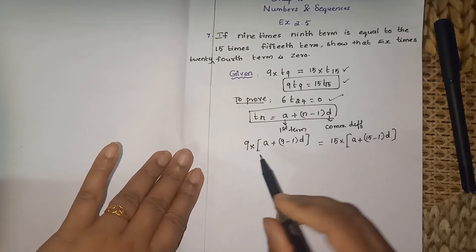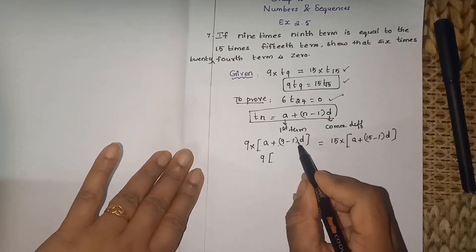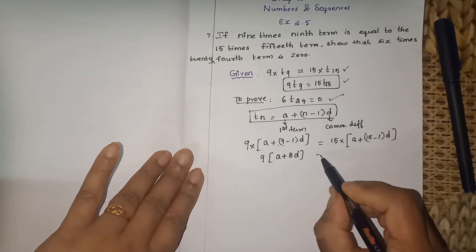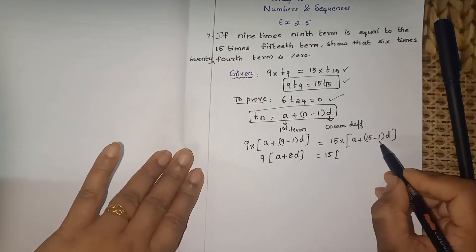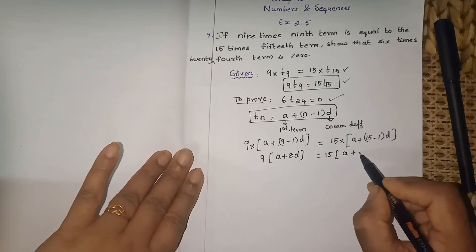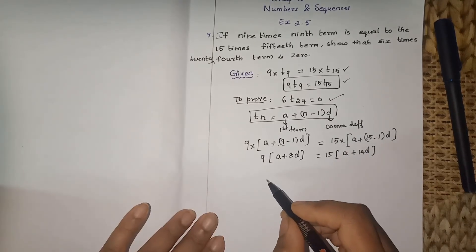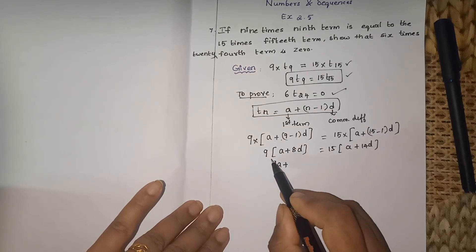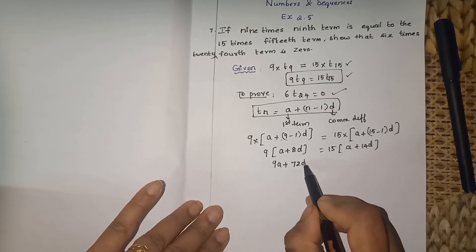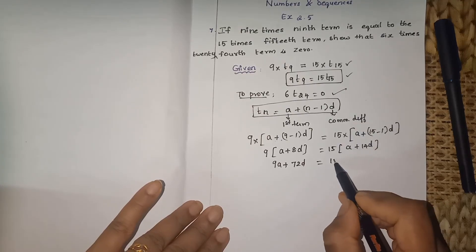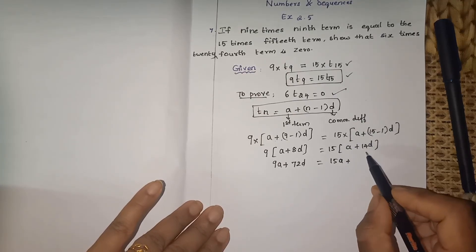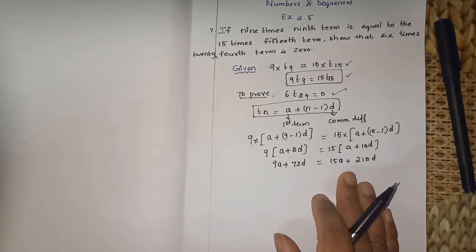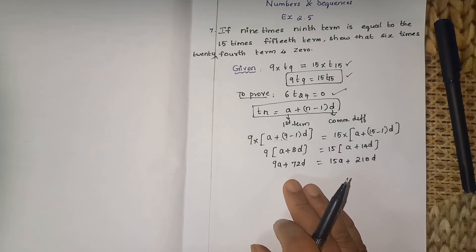Now simplifying: 9 into (a plus 8d) equals 15 into (a plus 14d). Expanding: 9a plus 72d equals 15a plus 210d.